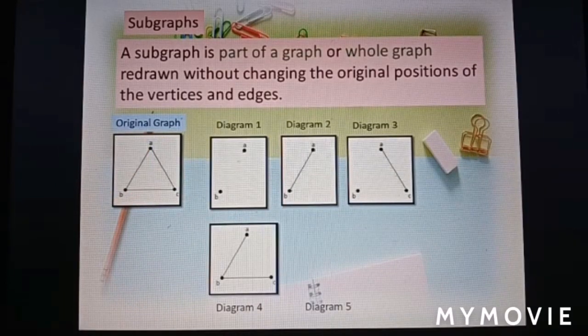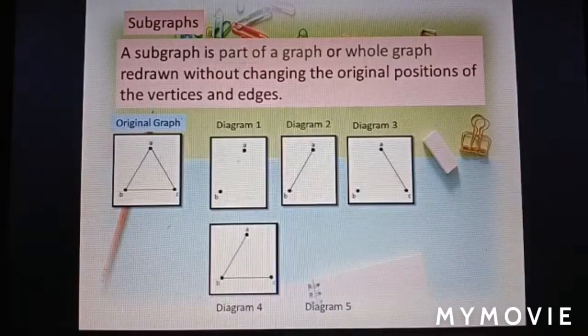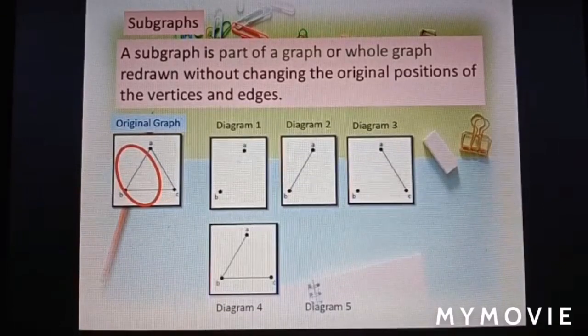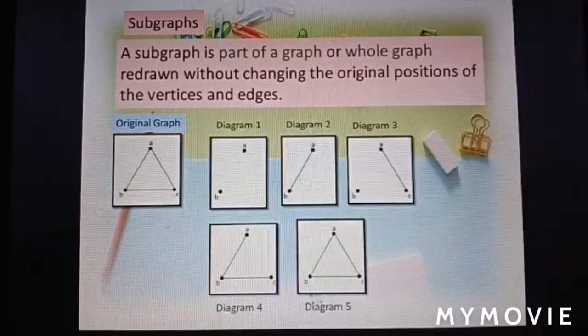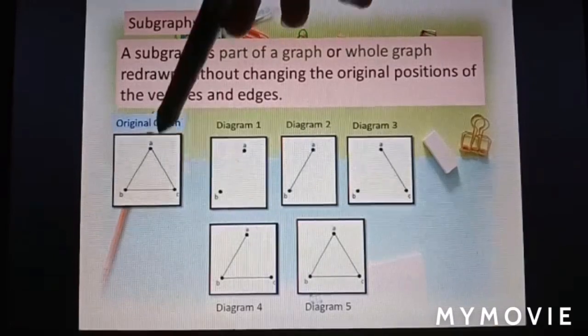Diagram 4: edges AB and BC, all from the original graph in the same position. And the last one, the whole graph redrawn, we also call it a subgraph of the original graph.